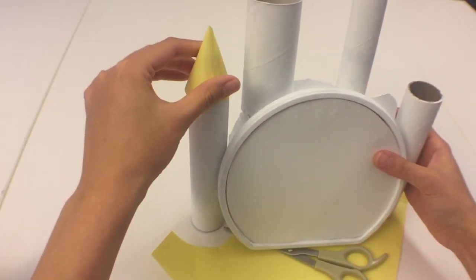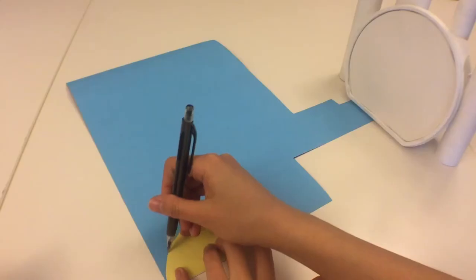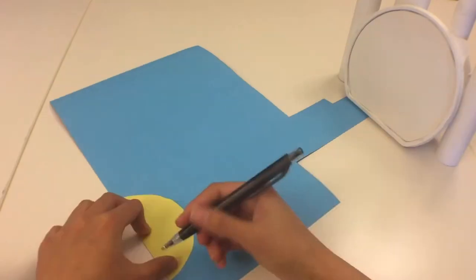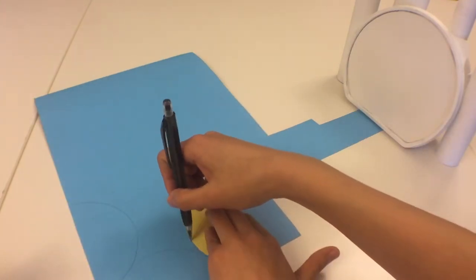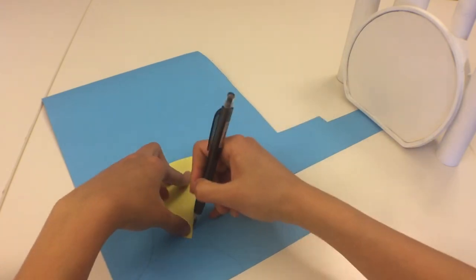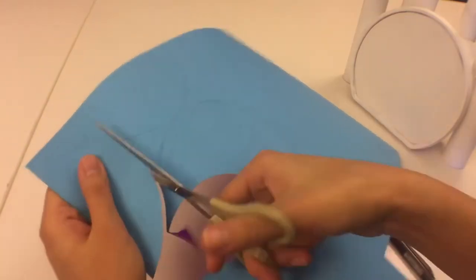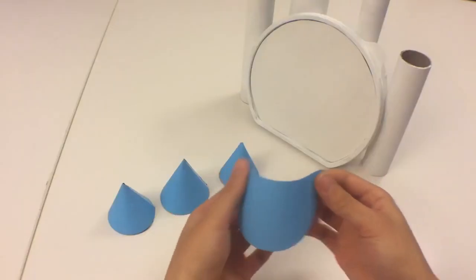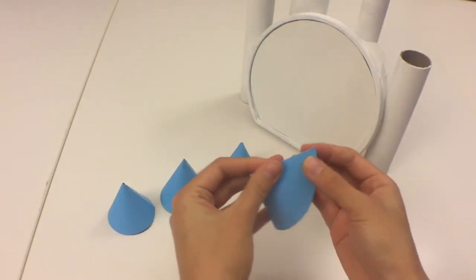Once I'm happy with it, I'm going to trace the shape onto an actual piece of bristol board four times because I have four pillars and you just want to cut them up. It should be really easy to roll them up. I just use tape here to keep them in place.